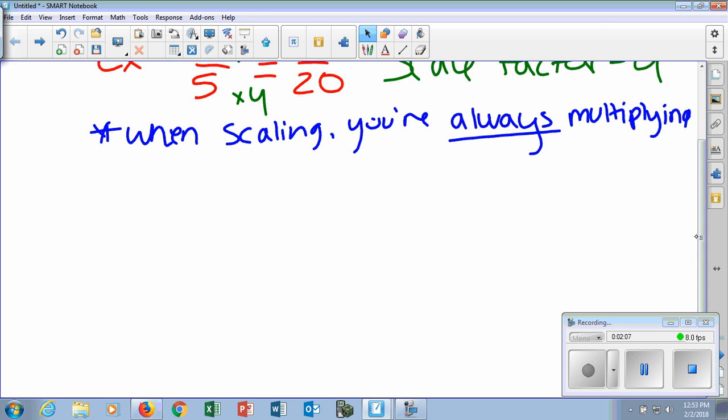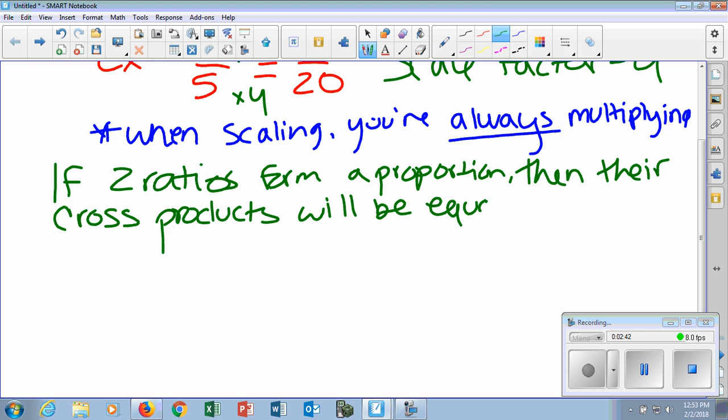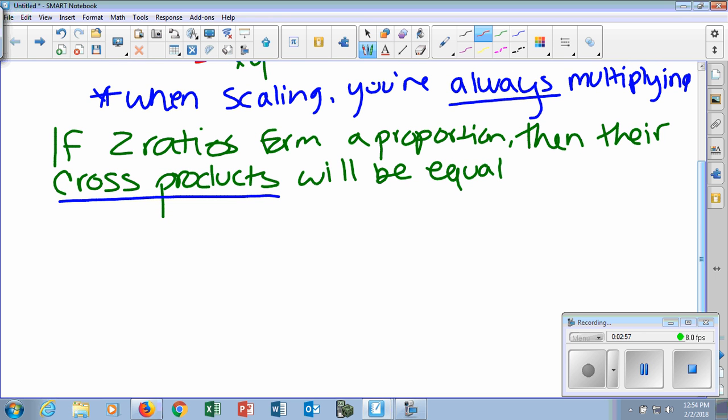So another way we can do it if we did not want to scale is if we took two ratios. If two ratios form a proportion, then their cross products will be equal. For example, cross products. Some of you have heard me say cross products, or you might have heard me say cross multiplying. That's exactly what cross products are. So if we look at another ratio, we can determine whether it is proportionate or not by using the cross product.